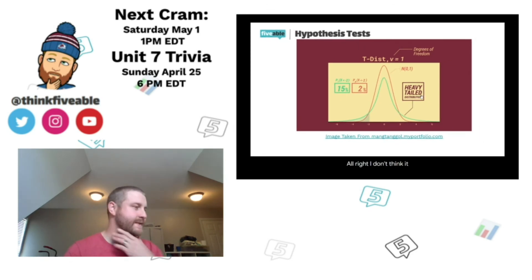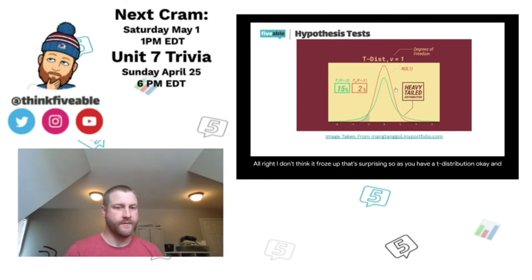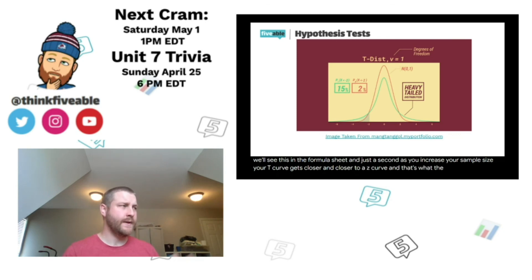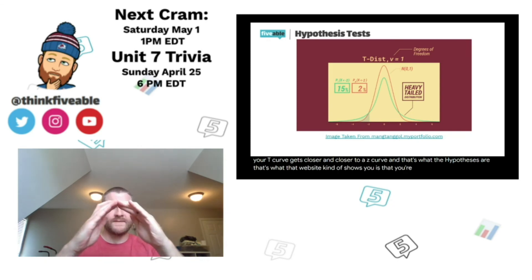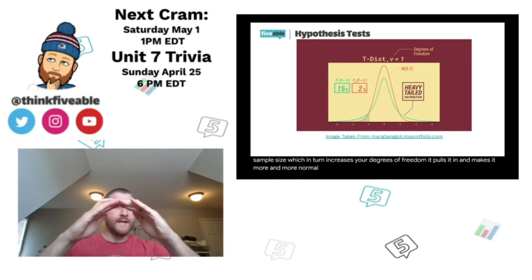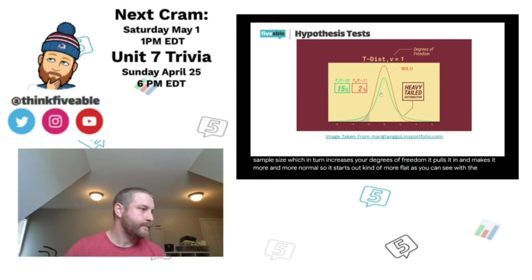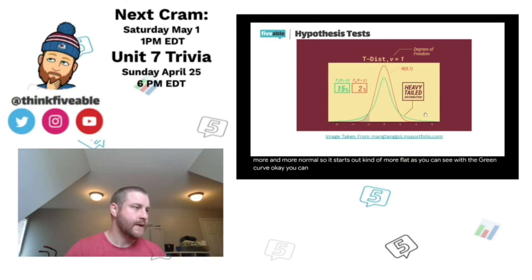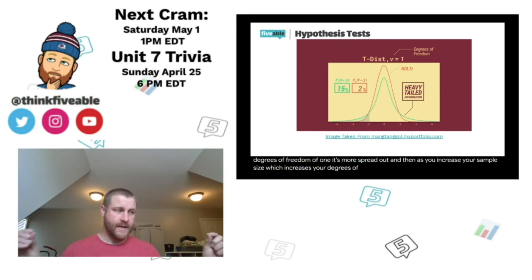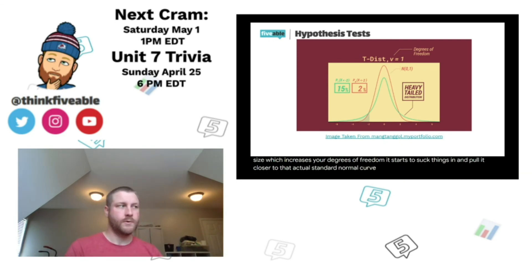As you increase your sample size, which increases your degrees of freedom, the t-distribution pulls in and becomes more and more normal. It starts out more flat and spread out with small degrees of freedom — you can see the green curve is more spread out — while the orange curve is the standard normal z-distribution. With degrees of freedom of one it's more spread out, but as sample size increases, the t-distribution converges toward the standard normal z-distribution.